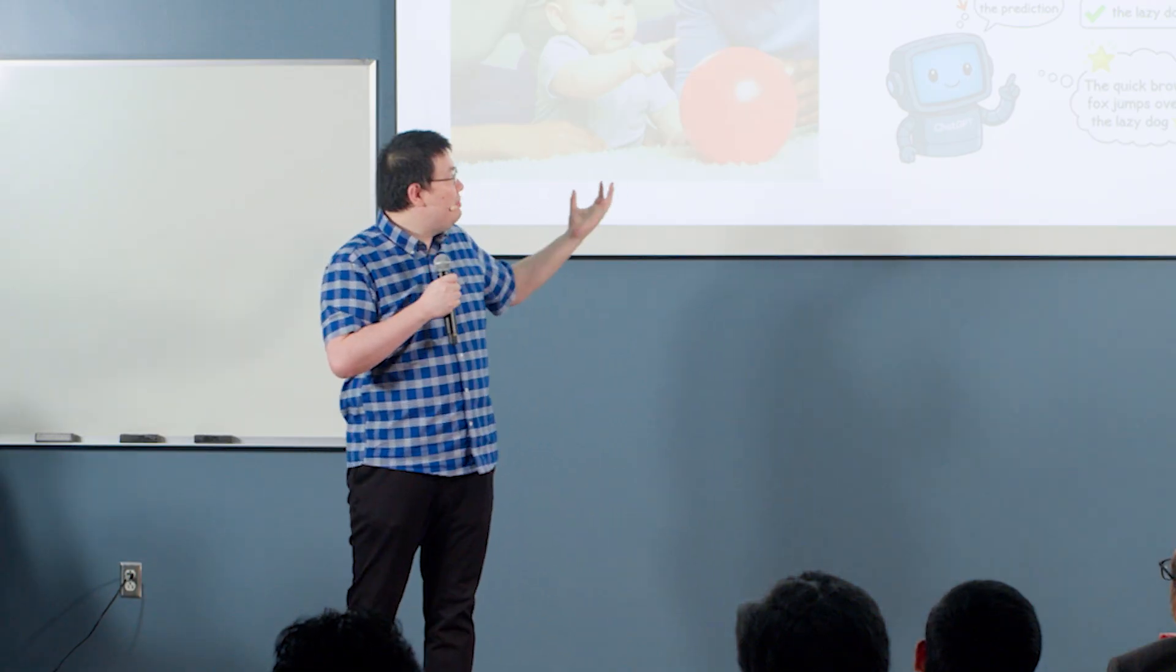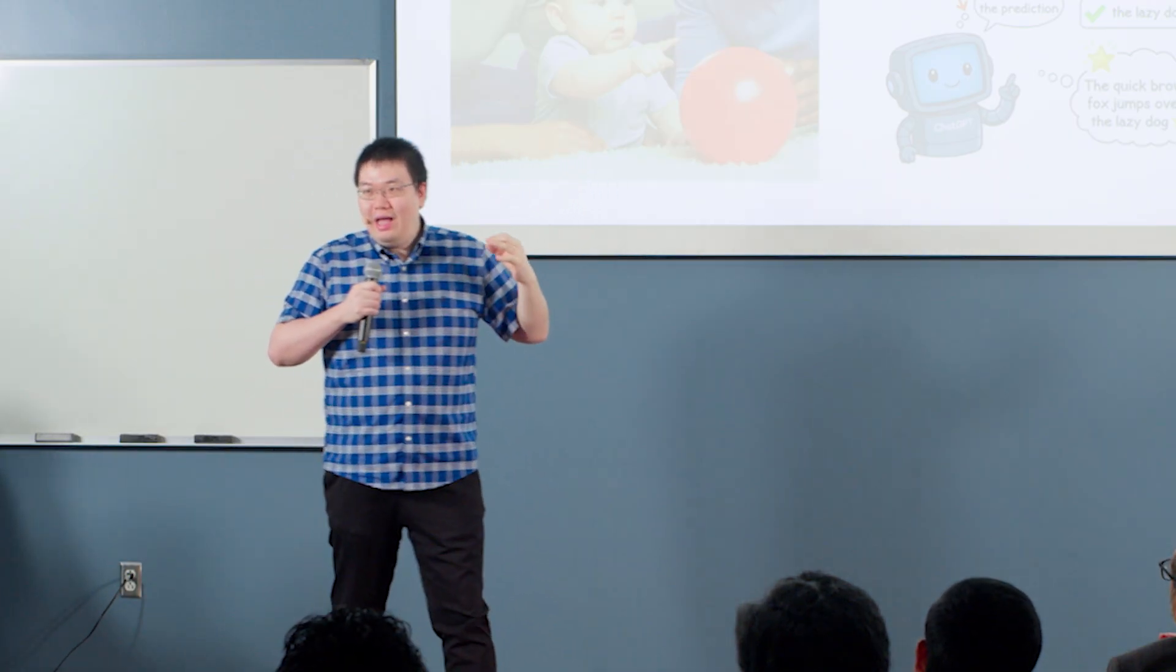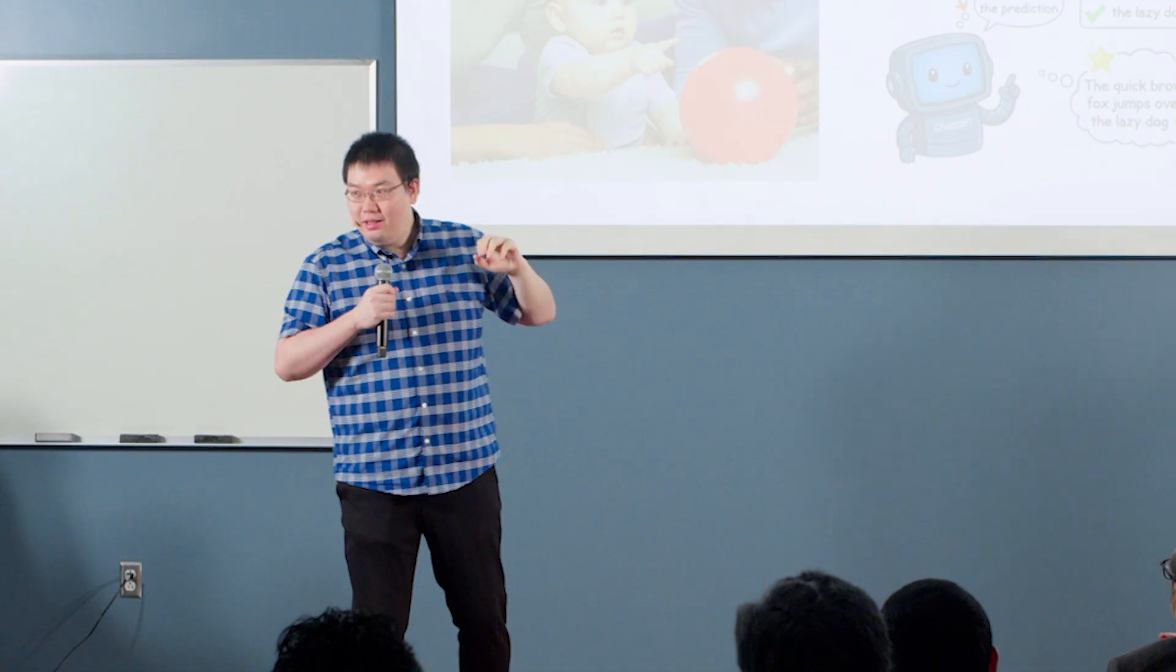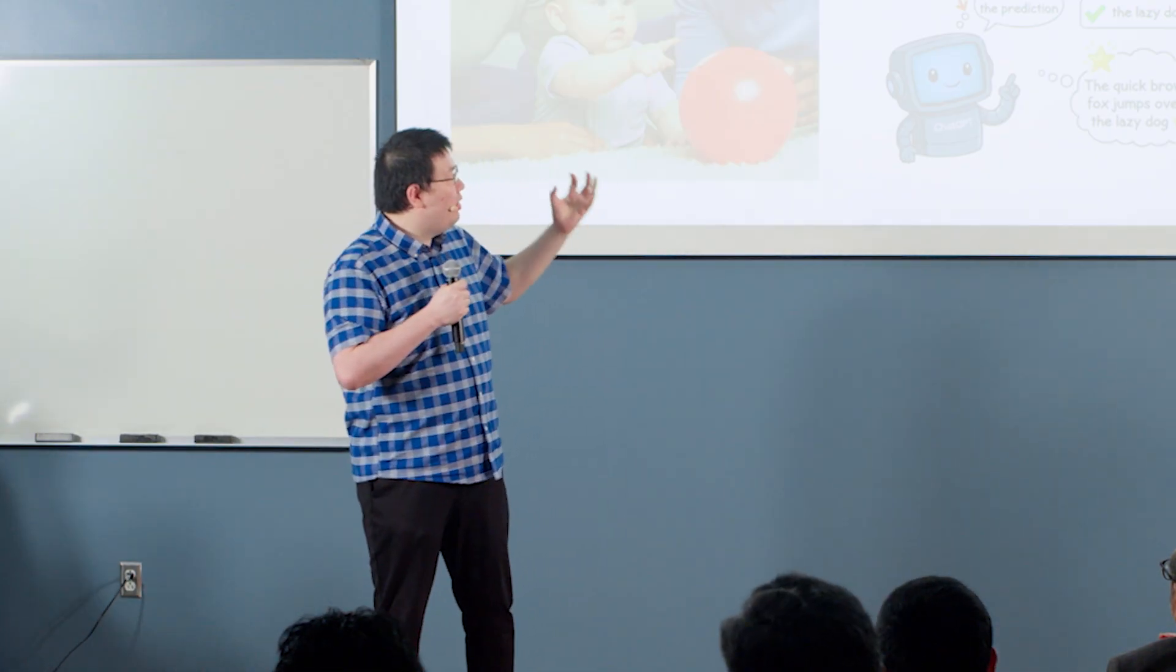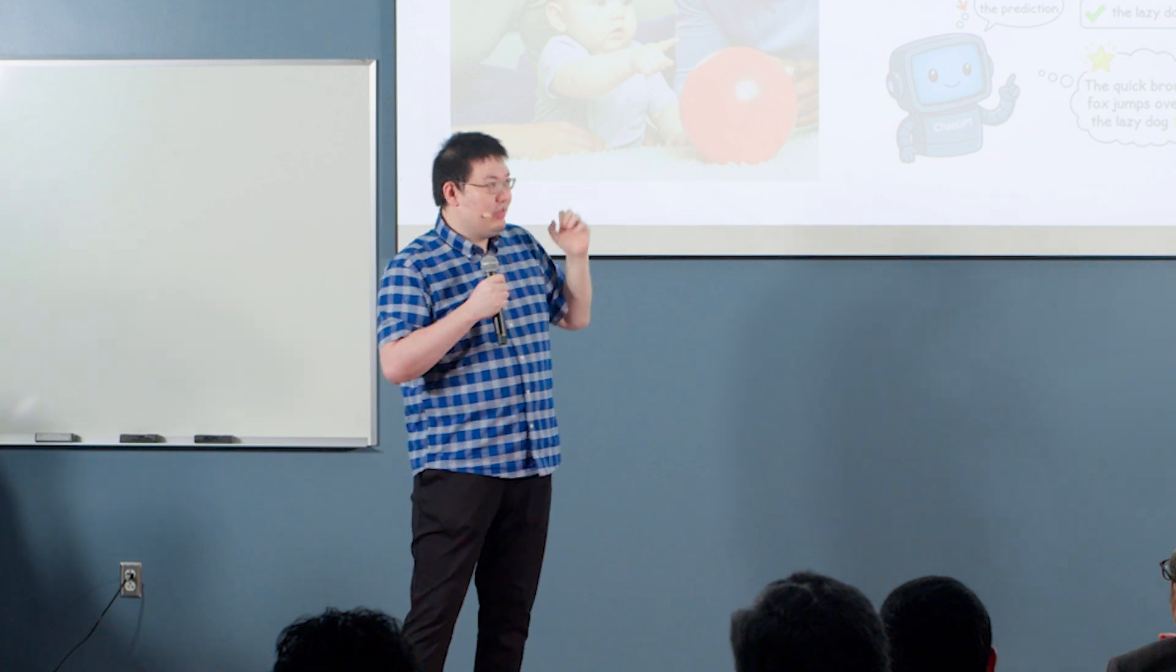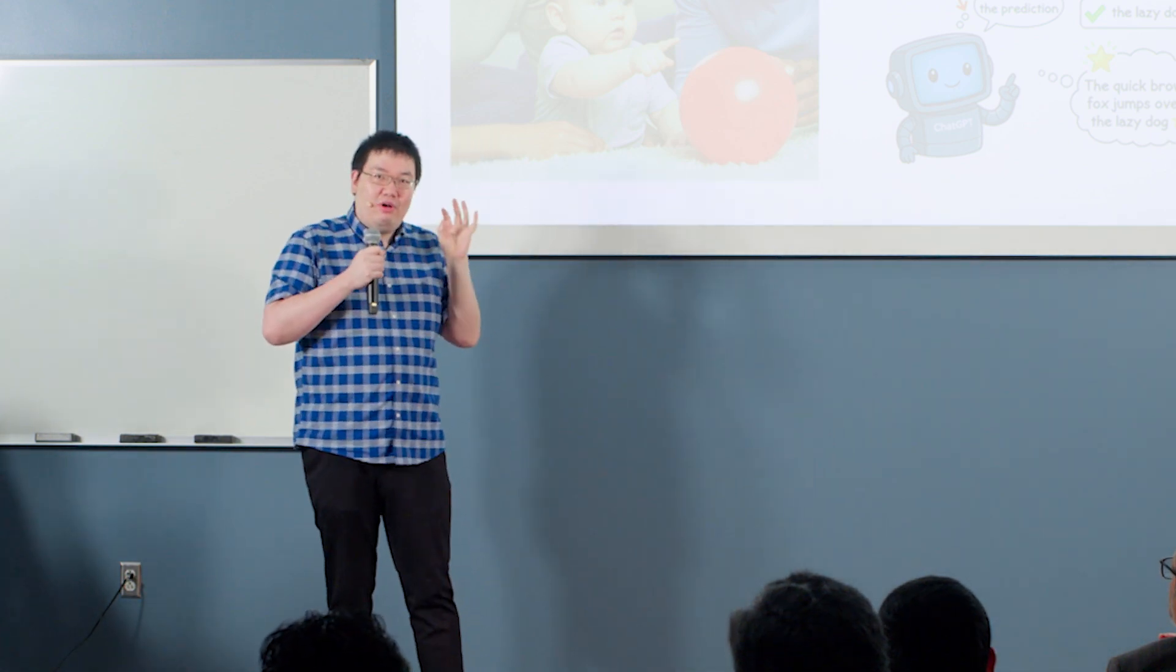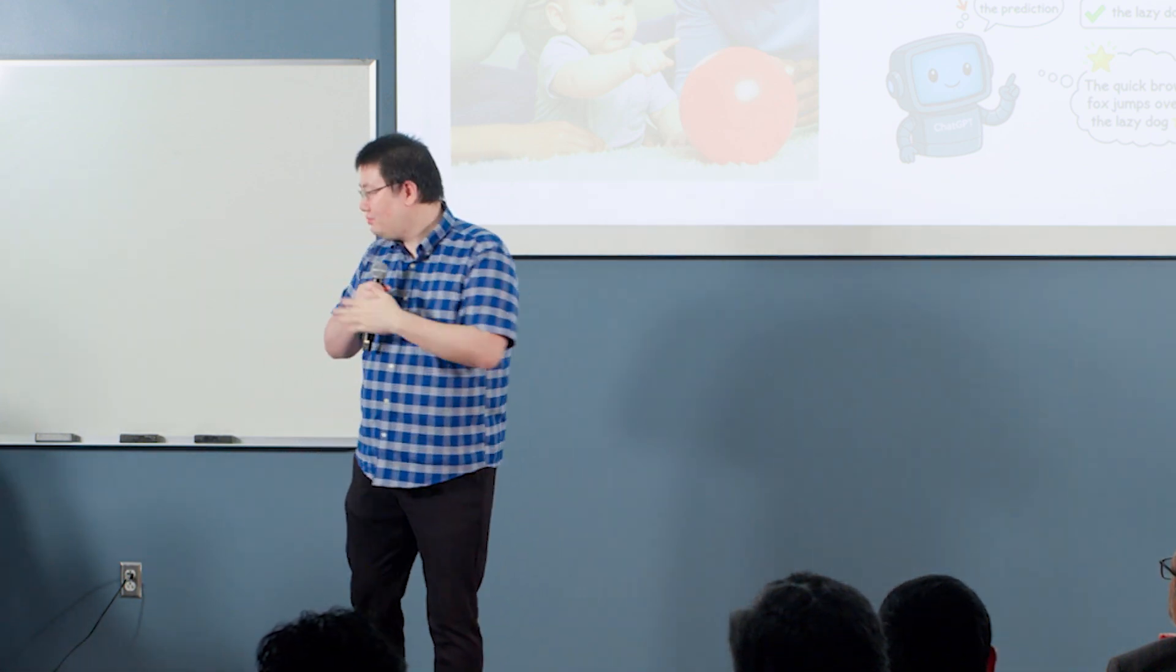They just randomly guess something, a rock, right? And then, because you have the ground truth data, you will tell ChatGPT that's the wrong answer. And they will update their model parameter to fit this answer. So that is an example of learning from mistakes.